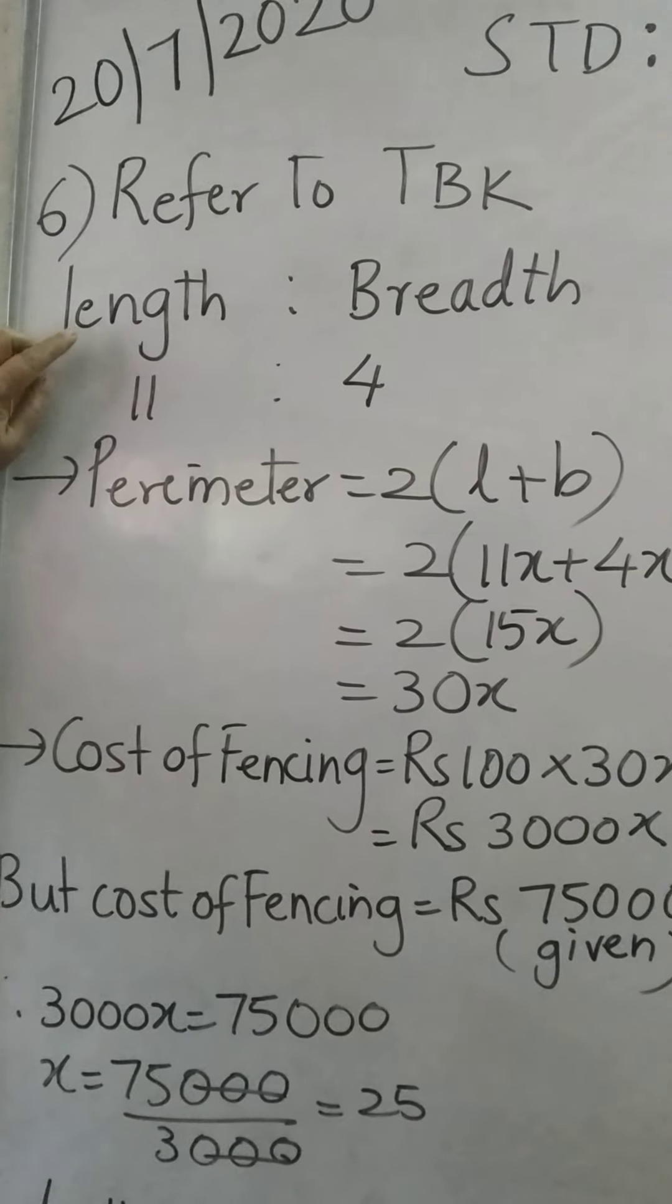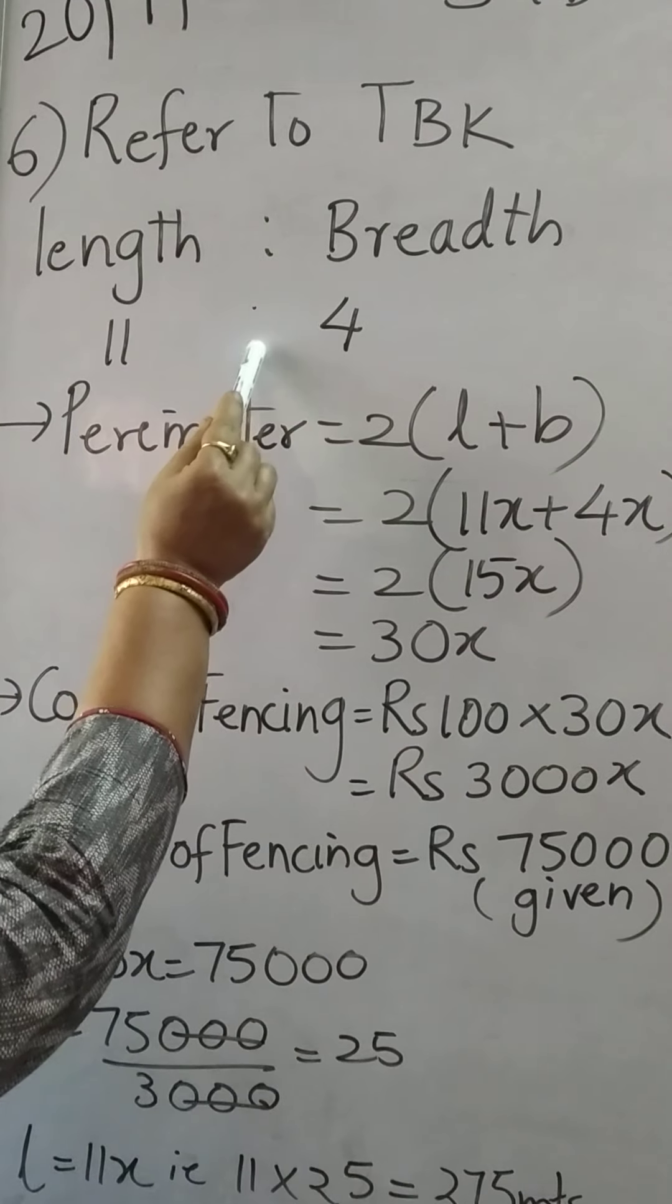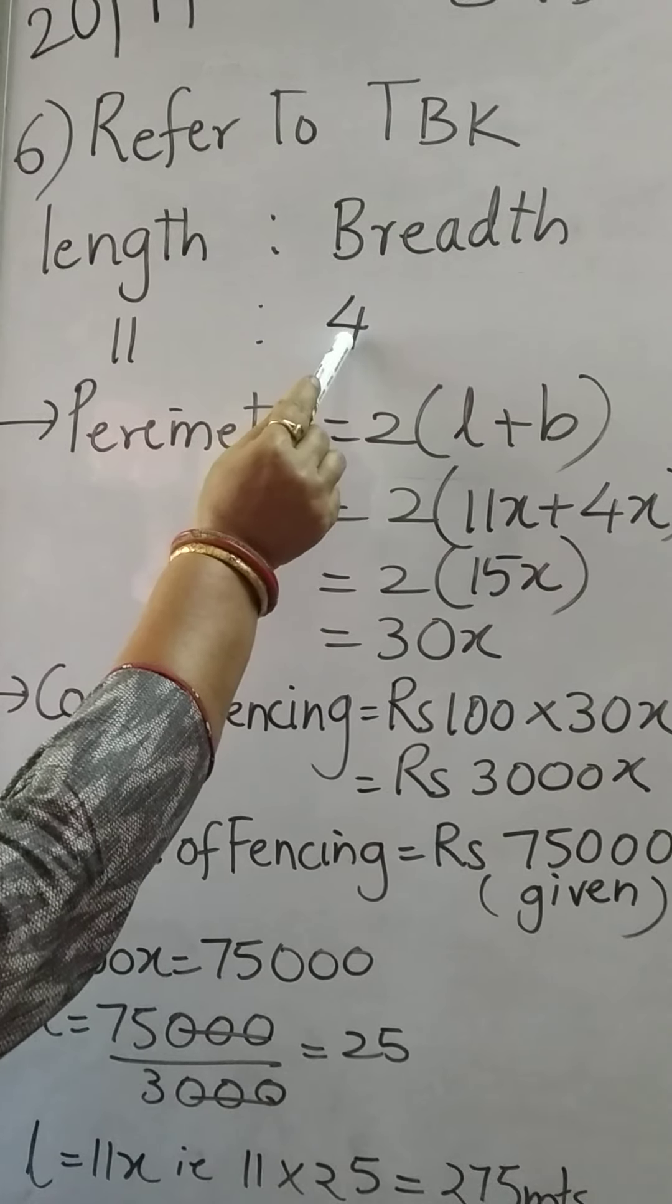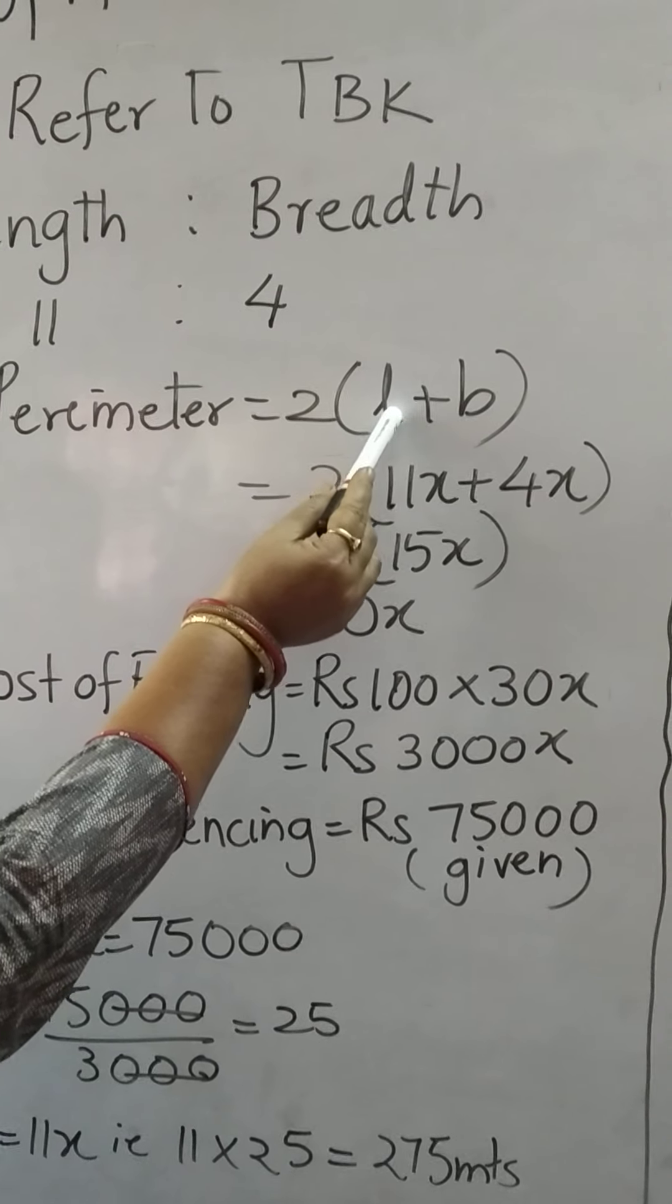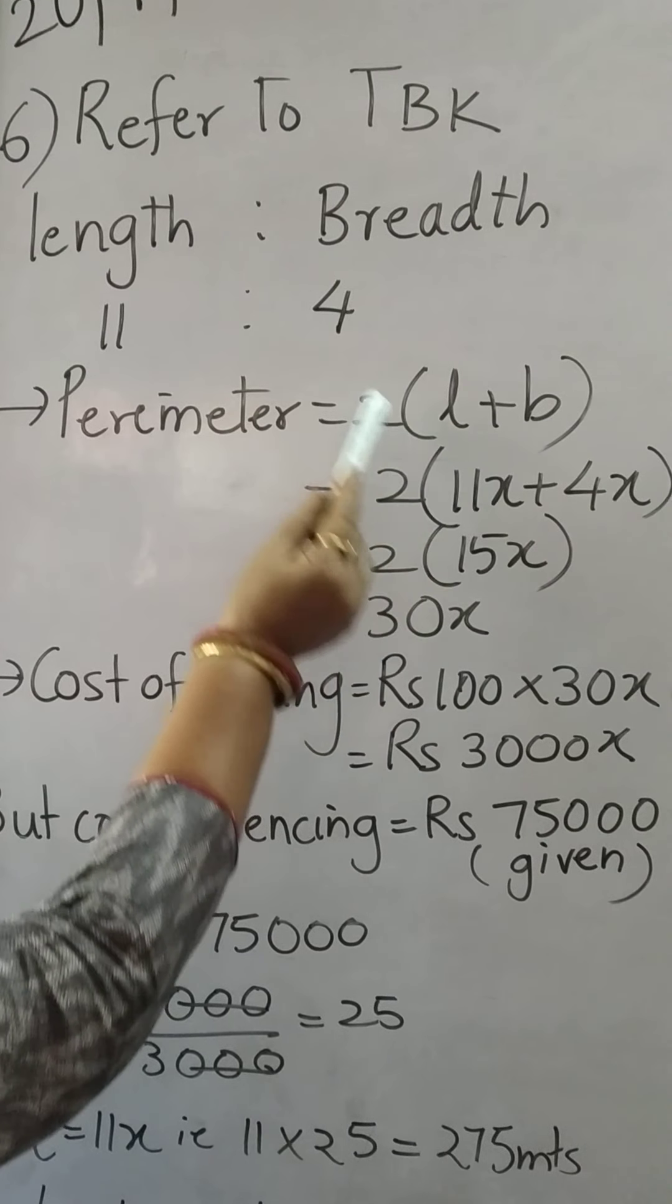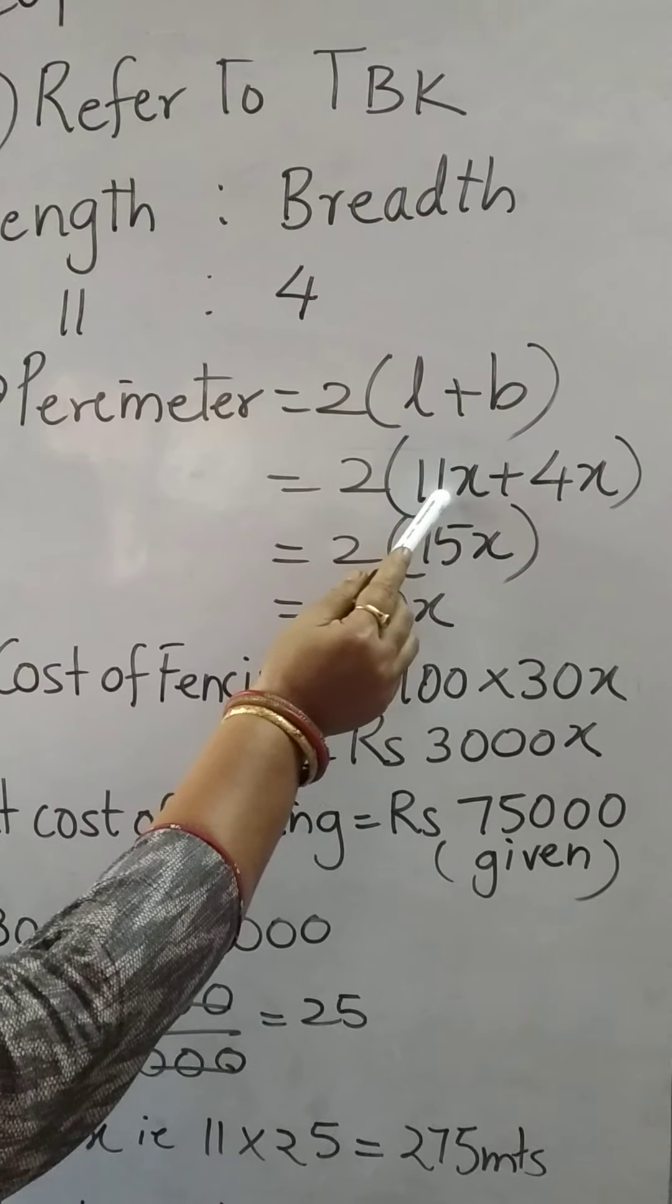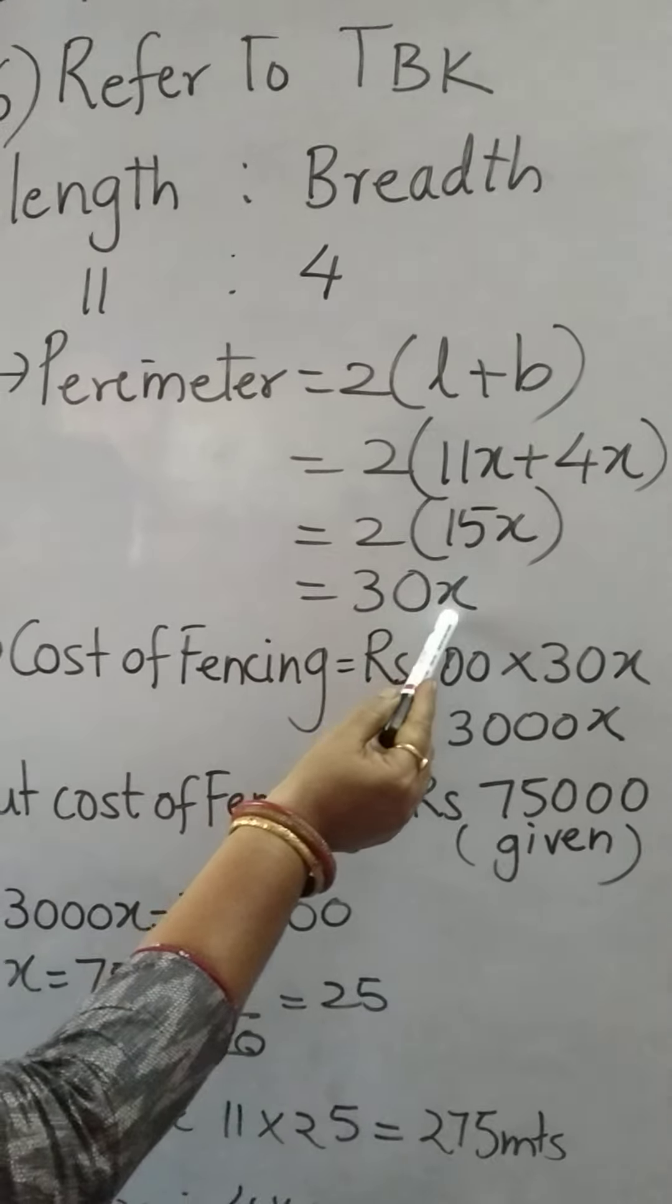It says that the ratio of length and breadth is 11 is to 4. This ratio is very important. Perimeter of the rectangle formula is 2 into L plus B. So length we take 11x, breadth we take 4x. Now what is 11 plus 4? 15. So 2 into 15x gives you 30x.